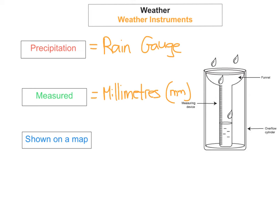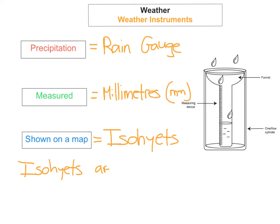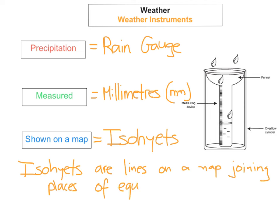Precipitation is shown on a map by lines called isohyets. Just like isotherms are lines of equal temperature, isohyets are lines on a map joining places of equal precipitation.